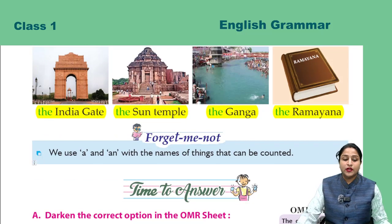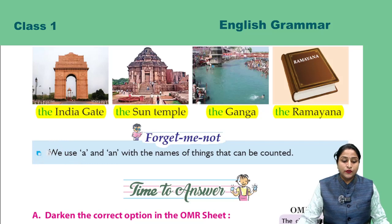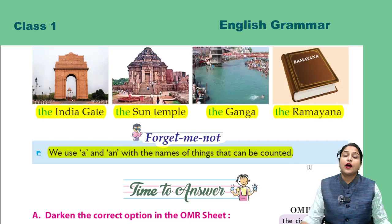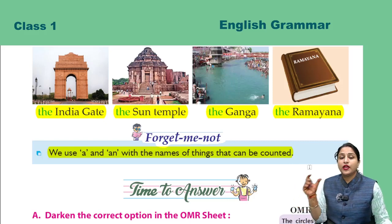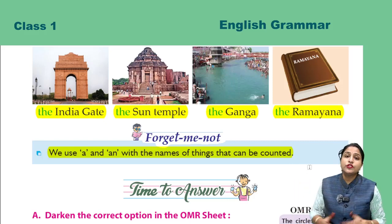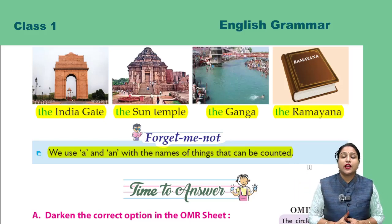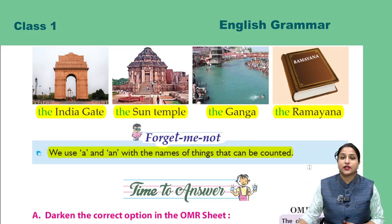Forget-me note. Ab ek note dekh lete hain: We use A and AN with the names of things that can be counted. Hum A aur AN un chizon ke aage lagate hain jinhe hum count bhi kar sakte hain.